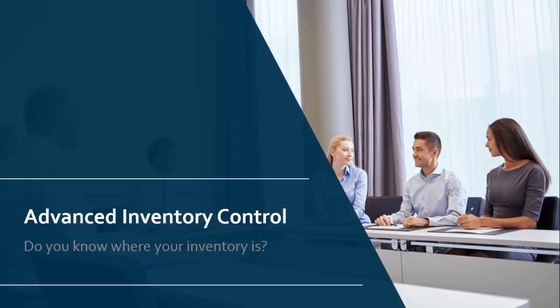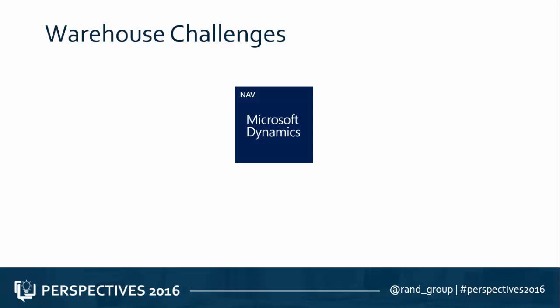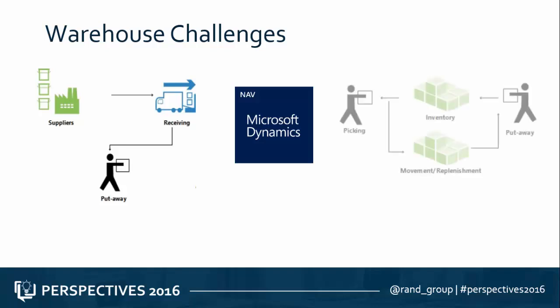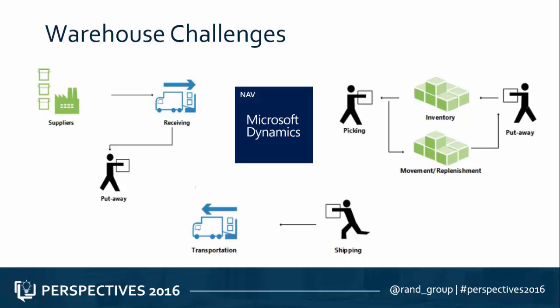As your business becomes more complicated and we need to track where everything is within the warehouse, that's where advanced inventory control from NAV comes into play. When we have warehouses, we have three primary things going on: goods coming in from our supplier that we need to receive and put away, movements within the warehouse whether we're picking inventory to sell or moving it into a manufacturing process, and then finally shipping our goods out to our customers. These challenges can be managed and monitored by the advanced warehousing granule within NAV.